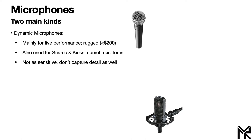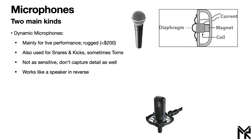Dynamic microphones work kind of like a speaker in reverse. A speaker works by applying a voltage across the voice coil, which induces a magnetic field that pushes the magnet in and out, moving the speaker cone and displacing air to create sound. A dynamic microphone works in reverse: a singer or instrument creates air pressure changes, which are picked up by the diaphragm attached to the magnet. As the magnet moves in and out of the metal coil, it induces a current which is translated into voltage, picked up by the cable, and converted into an audio file by your computer.